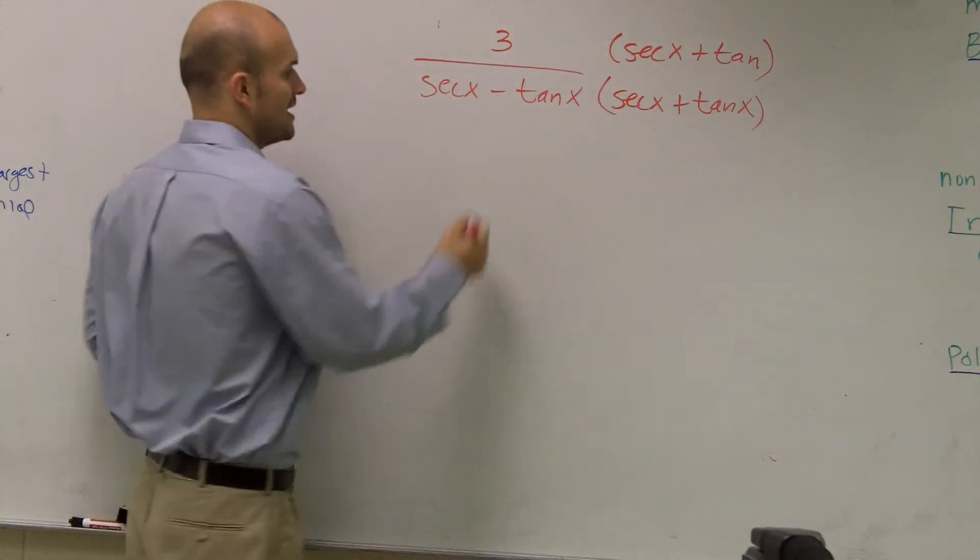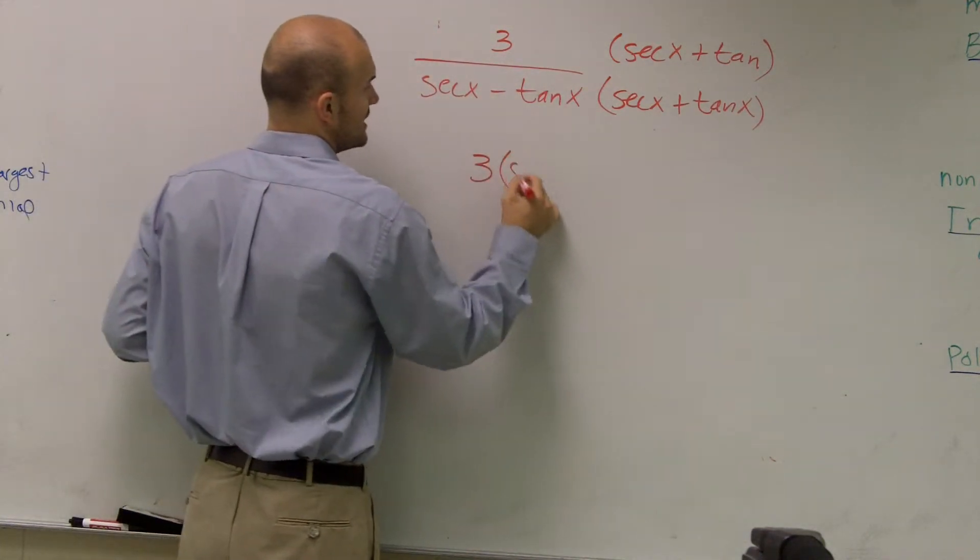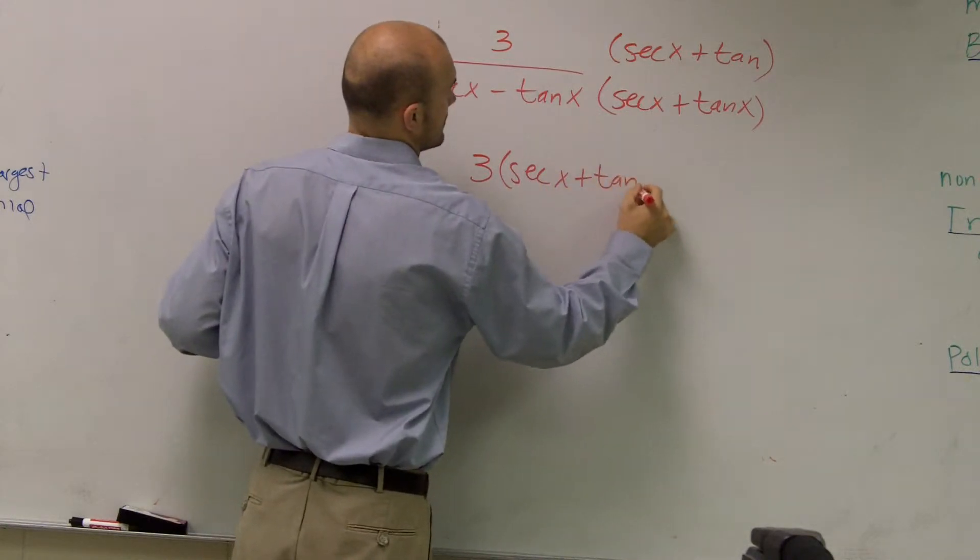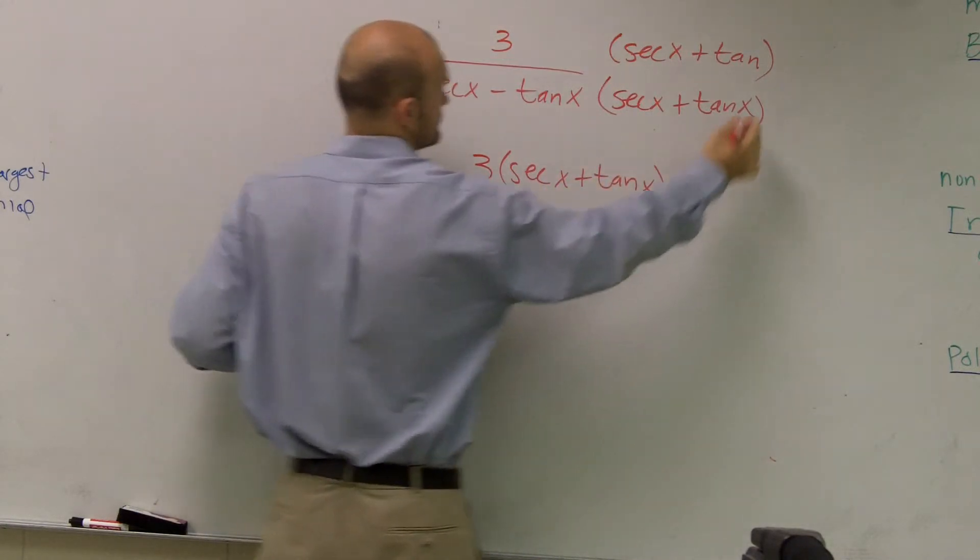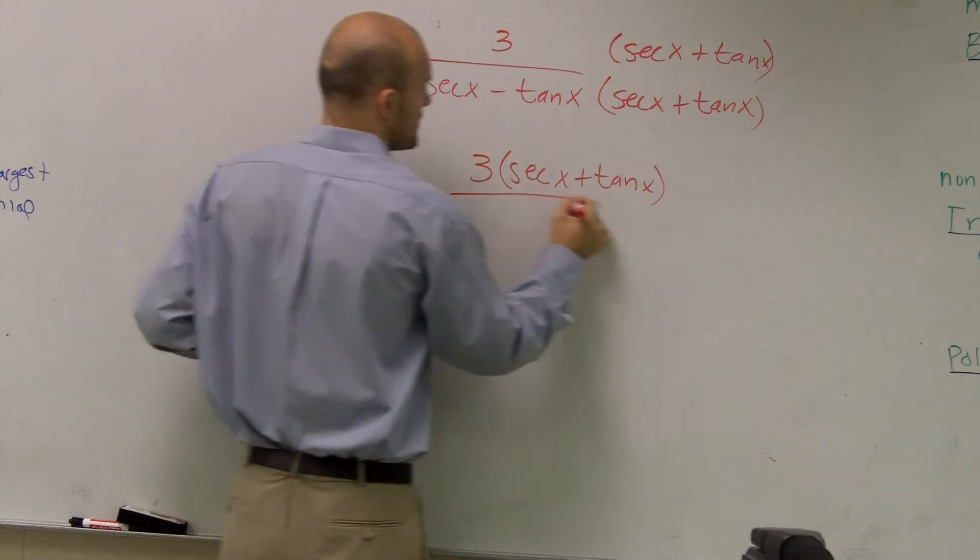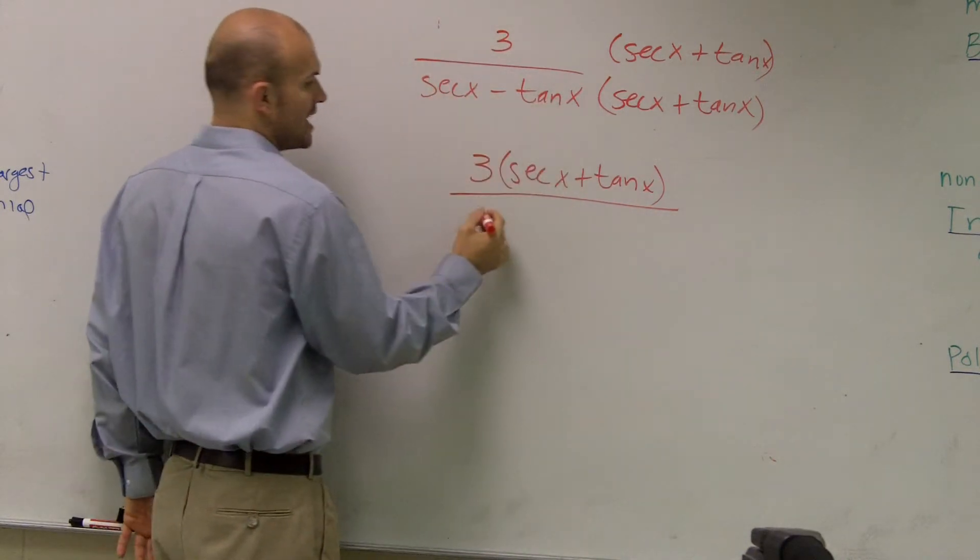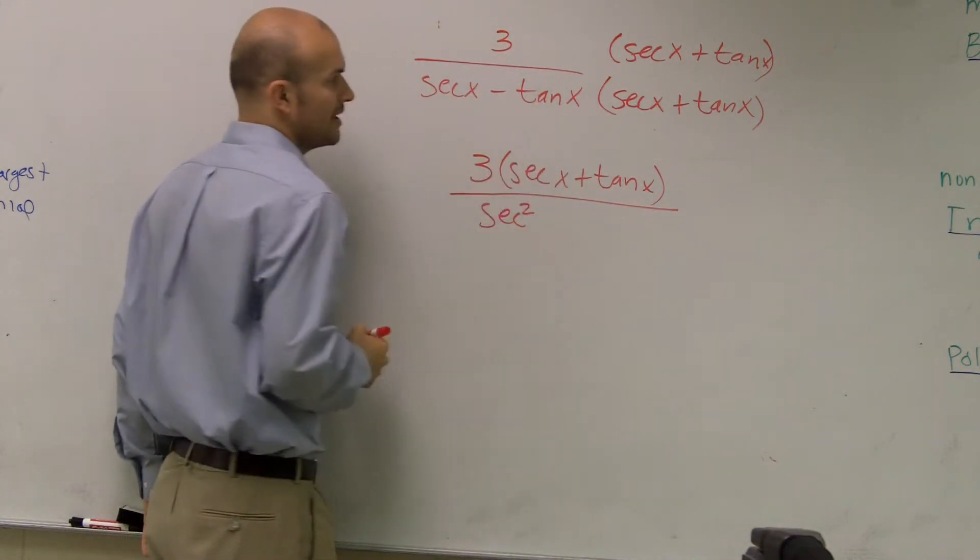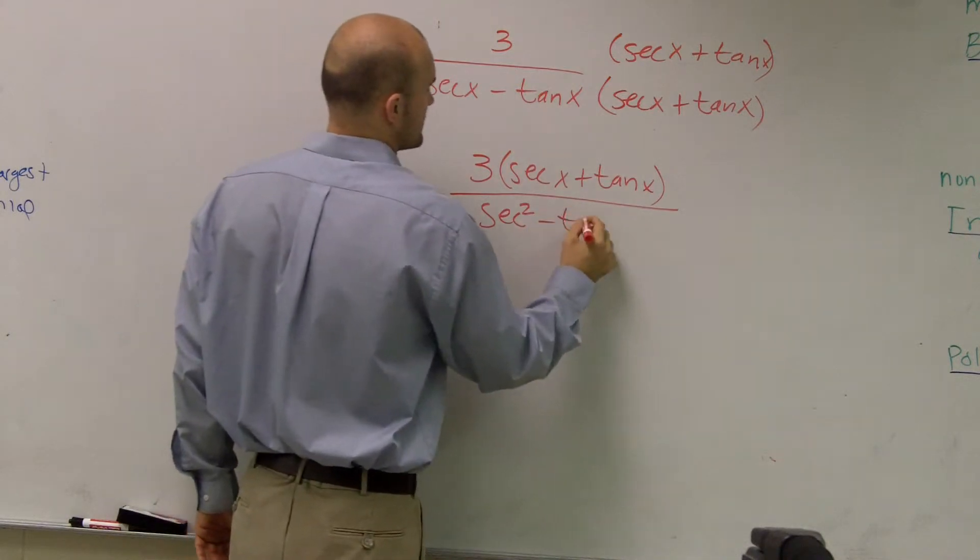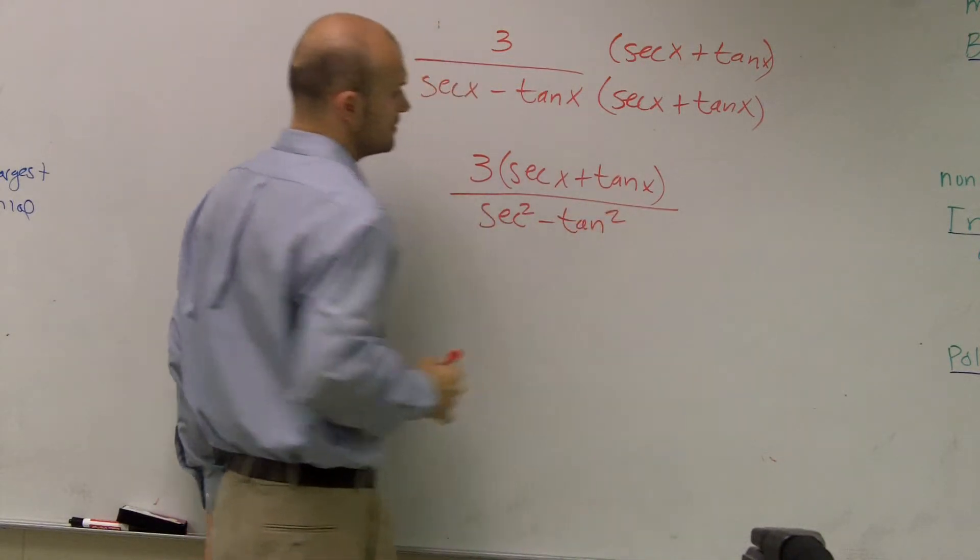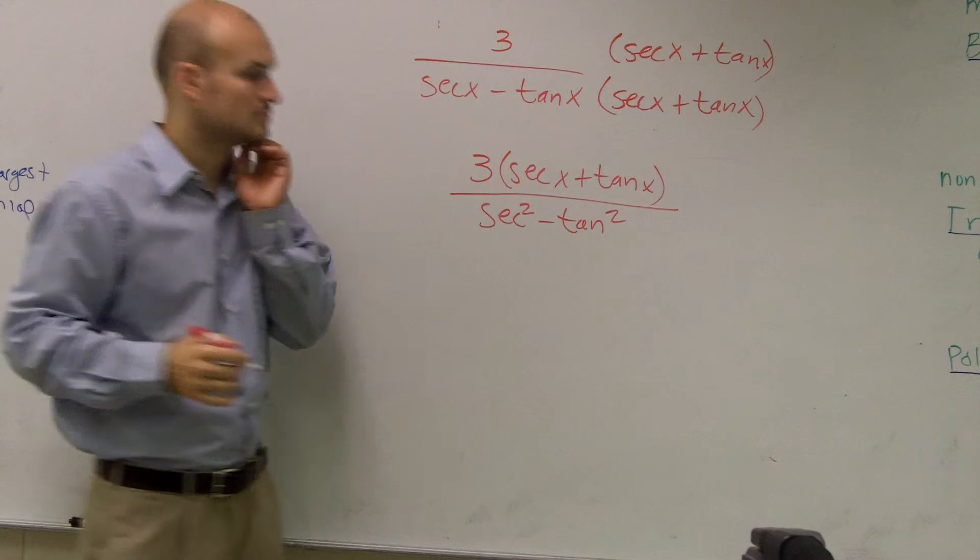So when I do that, I now obtain 3 times secx plus tanx, all over sec²x minus tan²x.